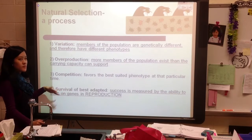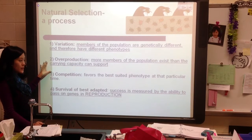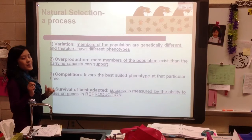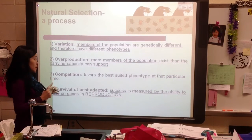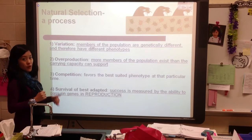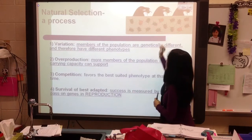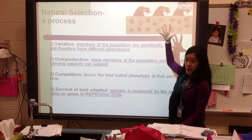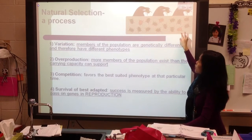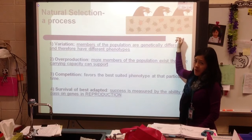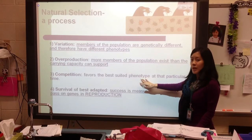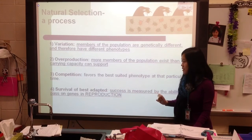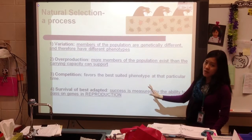Step three is competition. You're fighting for limited resources, and this favors the best-suited phenotype at that particular time. Being the most fit doesn't always mean you're the biggest, toughest one — it could mean you're the smallest and fastest, or the furriest, or simply a different color. In the picture, birds are eating beetles — the green beetles pop out and get eaten, but three brown beetles can camouflage in the background and survive. Those brown beetles are the best-adapted phenotype, and they successfully pass on their genes through reproduction.